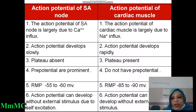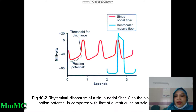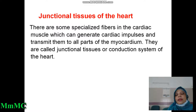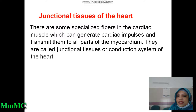Students, please remember and memorize these differences for your written and viva exams. These are the basic differences between SA nodal action potential and cardiac muscle fiber action potential. Now, another important written question: junctional tissues of the heart. These are specialized fibers in the cardiac muscle which can generate cardiac impulses and transmit them to all parts of the myocardium. They are called junctional tissues or conduction system of the heart.